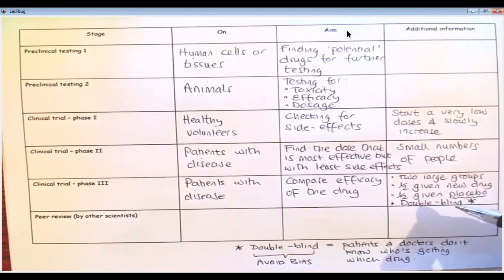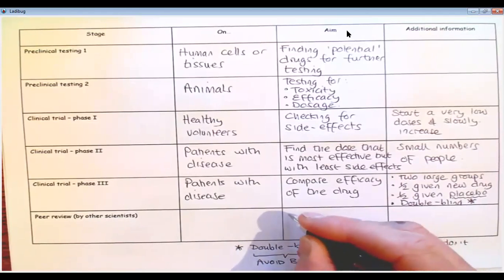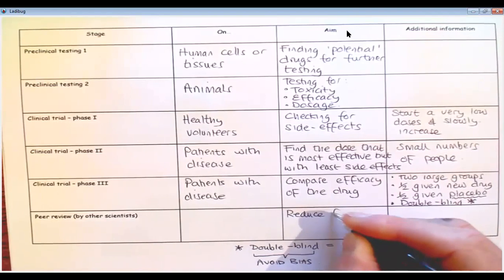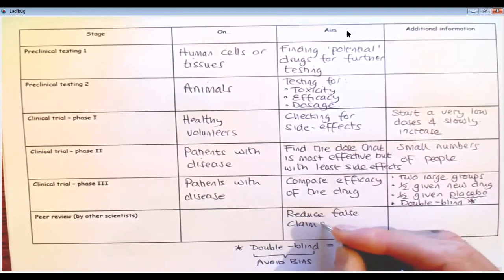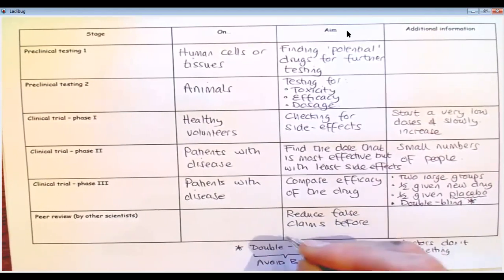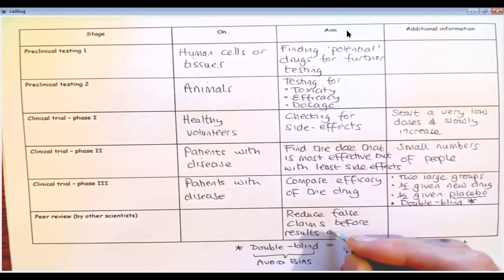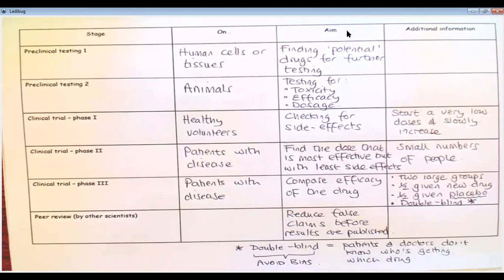What happens after all of that is that whoever's conducting the trial will have a load of data, a load of results, which will require publishing. But before they can be published, before they can be put in a journal and put out there on the internet for everyone to see, they get what's called peer-reviewed by other scientists. So they're sent to other scientists, like people top in their field, and they say, this is what we've done, these are our results, have a look at them for us. And it's a way of checking the credibility, to see if the results are credible. So over here, I'm going to write down the aim of this. Okay, so this is to reduce false claims before results are published.